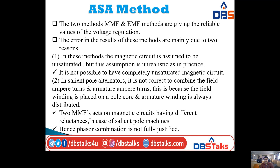The second reason is that in salient pole alternators it is not correct to combine the field ampere turns and armature ampere turns, because the field winding is placed on a pole core and the armature winding is always distributed. Since two MMFs act on magnetic circuits having different reluctances in the case of salient pole machines, the phasor combination is not fully justified in the MMF and EMF methods.